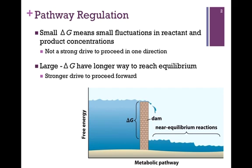There are other reactions, however, where there is a large favorable change in delta g. That means they have a longer way to reach equilibrium, and therefore a stronger drive to proceed forward. So if we influence the pathway at these large favorable changes in delta g, we can have the greatest impact on the pathway as a whole.